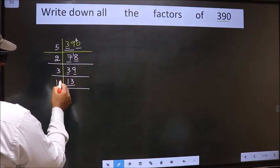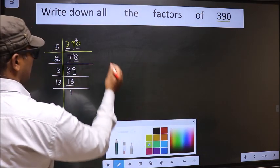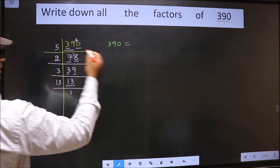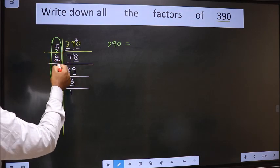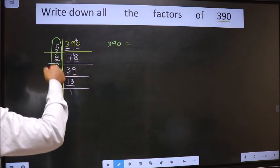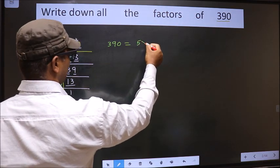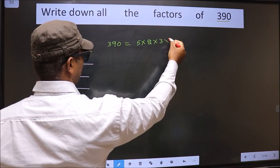Now here we have 13. 13 is a prime number. So 13 1s 13. So now 390 equal to the product of these numbers. Product of these numbers. That is 5 into 2 into 3 into 13.